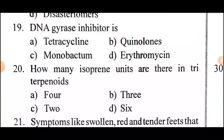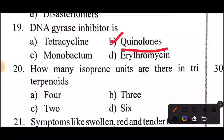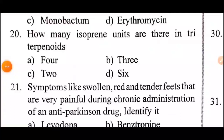Question 15: DNA gyrase inhibitor is? Answer: option B, quinolones.